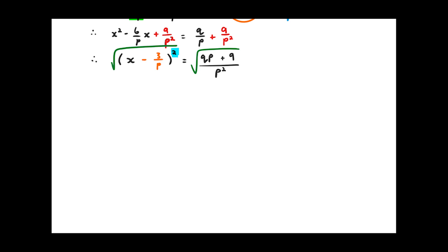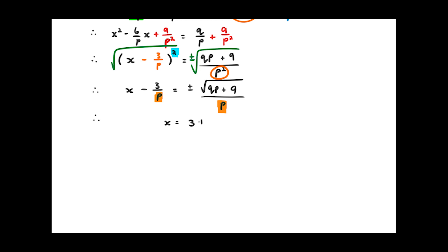To remove the square on the left, I take the square root of both sides — don't forget the plus or minus. So x minus 3 over p equals plus or minus the square root of (qp plus 9), all over p. Notice the denominators match up. Therefore the final answer is x equals 3 over p plus or minus the square root of (qp plus 9), all over p. That's completing the square using variables.